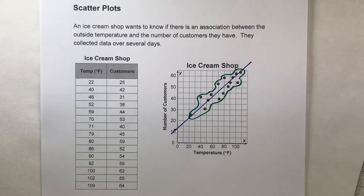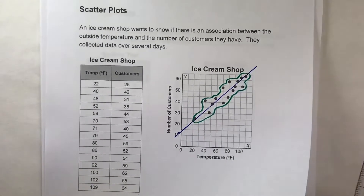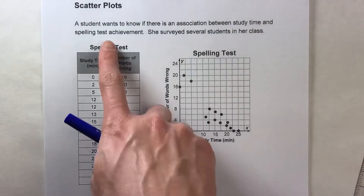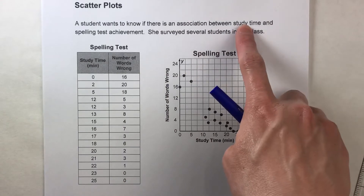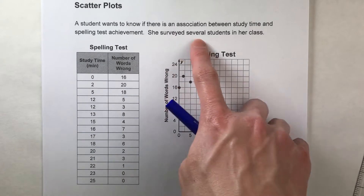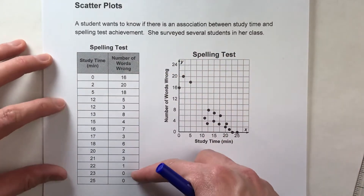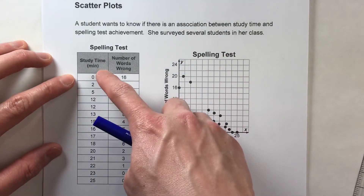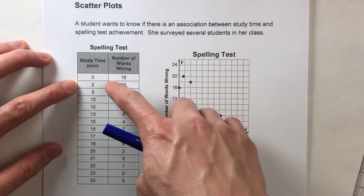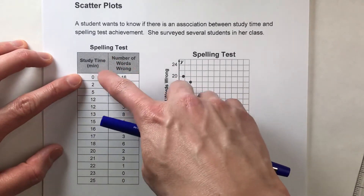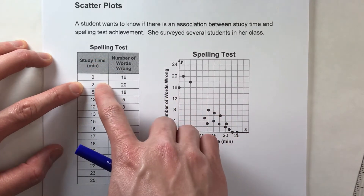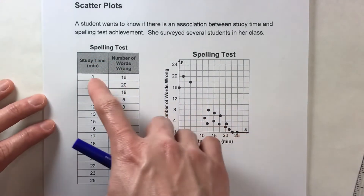I've got a second example that's a little different. Again we're working with scatter plots, but this time a student wants to know if there's an association between study time and how they did on the spelling test. The student surveyed several classmates, and here's the data: study time and number of words they got wrong. Each row represents a student — for example, the first student didn't study at all but got 16 questions wrong, and the second studied for two minutes and got 20 wrong.